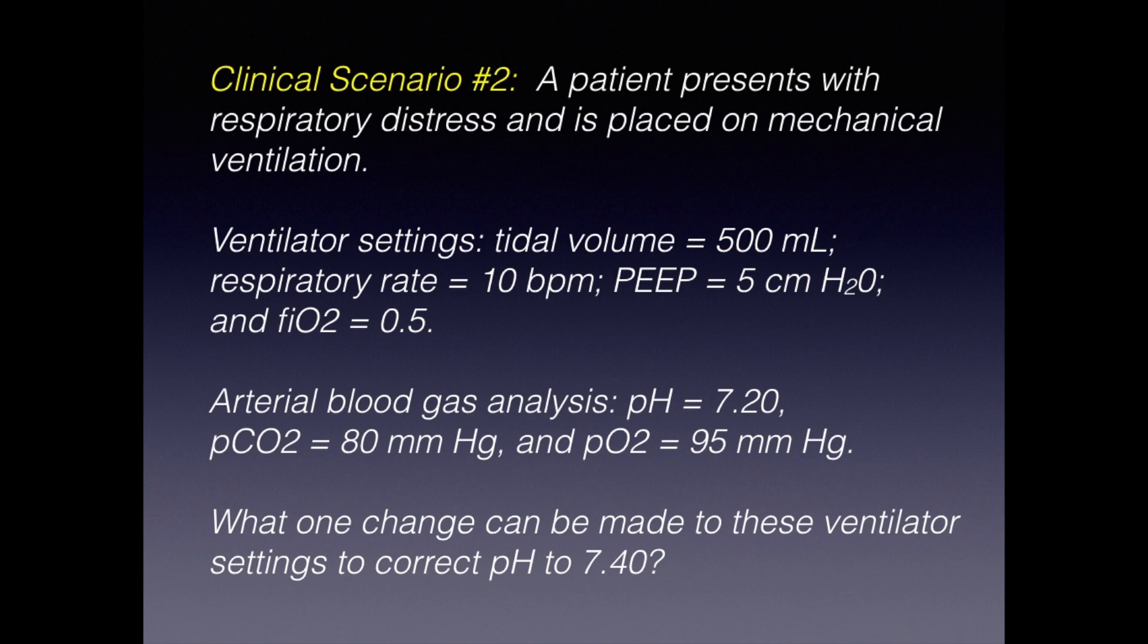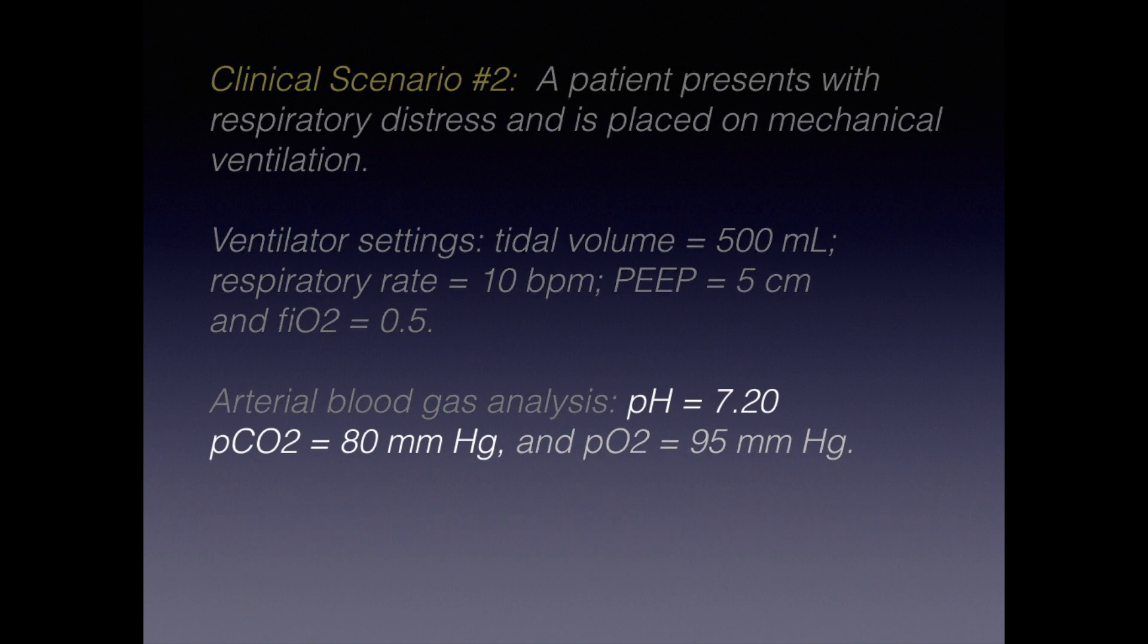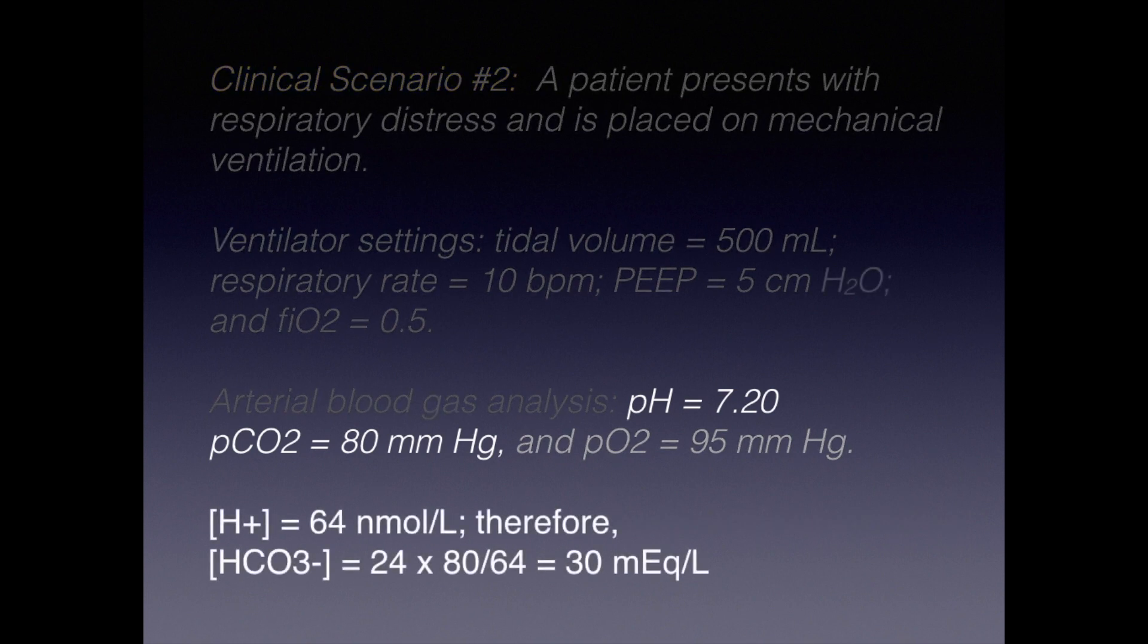Well, this is actually fairly straightforward. The first step is to calculate serum bicarbonate concentration. We know that at a pH of 7.20, hydrogen ion concentration equals 64 nanomoles per liter. Since we know that pCO2 is currently 80, we can plug these values into our equation and find that bicarb equals 24 times 80 divided by 64, or serum bicarbonate concentration equals 30 millimoles per liter.